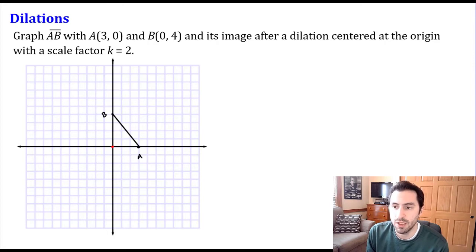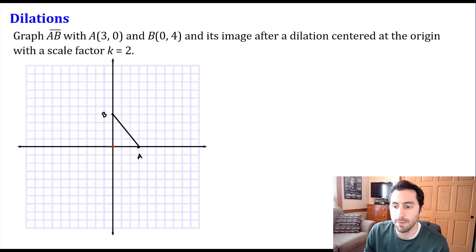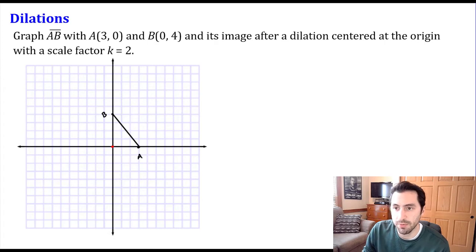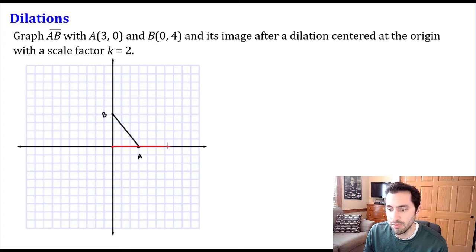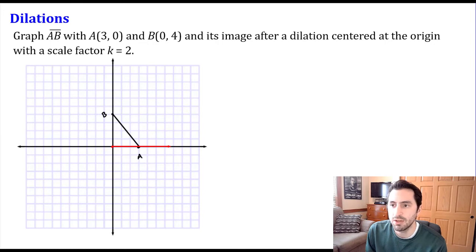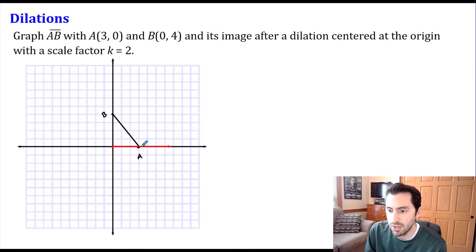With a scale factor of two, from the origin these points are going to move twice as far away. Right now A is three units away from the origin, so when I dilate this, doubling that distance means A prime will be six units away. We can also think about this as our points moving along a ray from the center of dilation through the original point, further away. So A prime ends up at six units away — that's at position six on the x-axis.